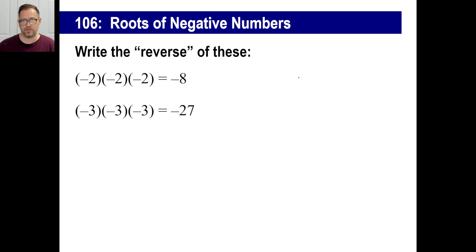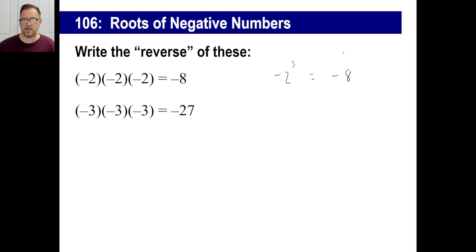So let's go backwards. Let's look at these. Negative 2 times negative 2 times negative 2 is negative 8, right? That's negative 2 to the third power. Negative 2 to the third power is the same thing as negative 8. You can write the reverse of this and go: the cube root of negative 8 — if you were to see that circled problem, you would say, what number times itself 3 times gives you negative 8? The answer is negative 2.